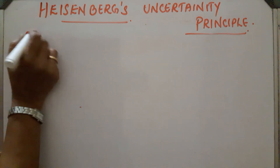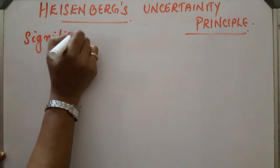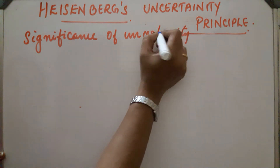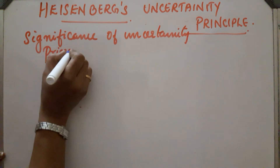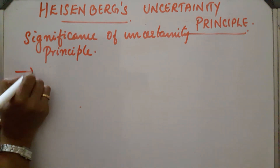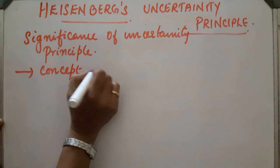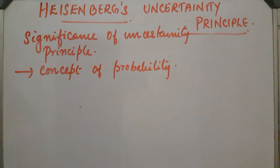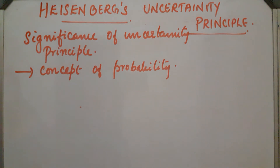Next, the significance of the uncertainty principle. The uncertainty principle is a concept of probability. One important implication is that it rules out the existence of a definite path for moving particles like electrons. According to the Bohr model of the atom, electrons are particles revolving around the nucleus in fixed orbits.